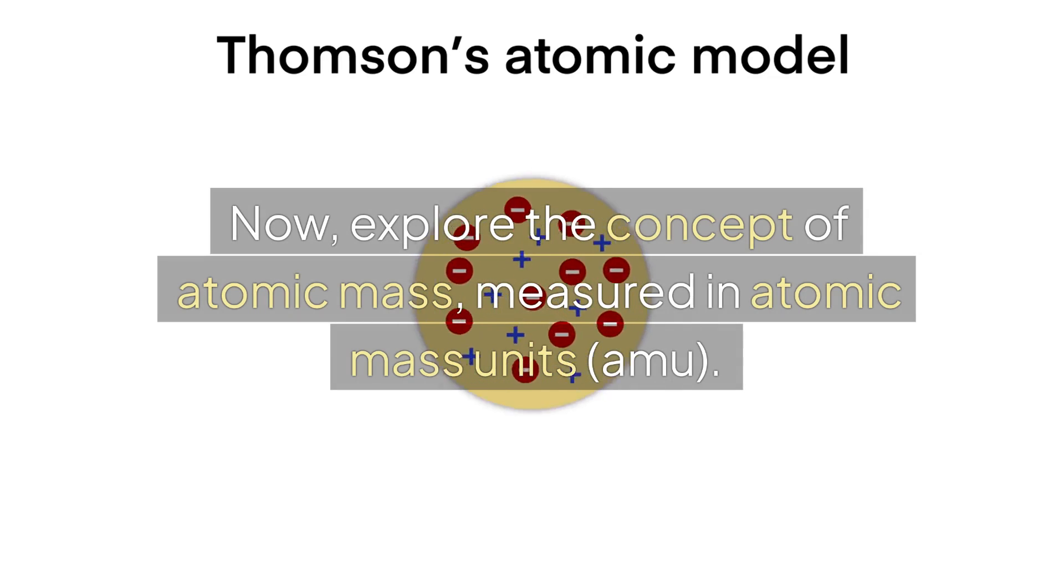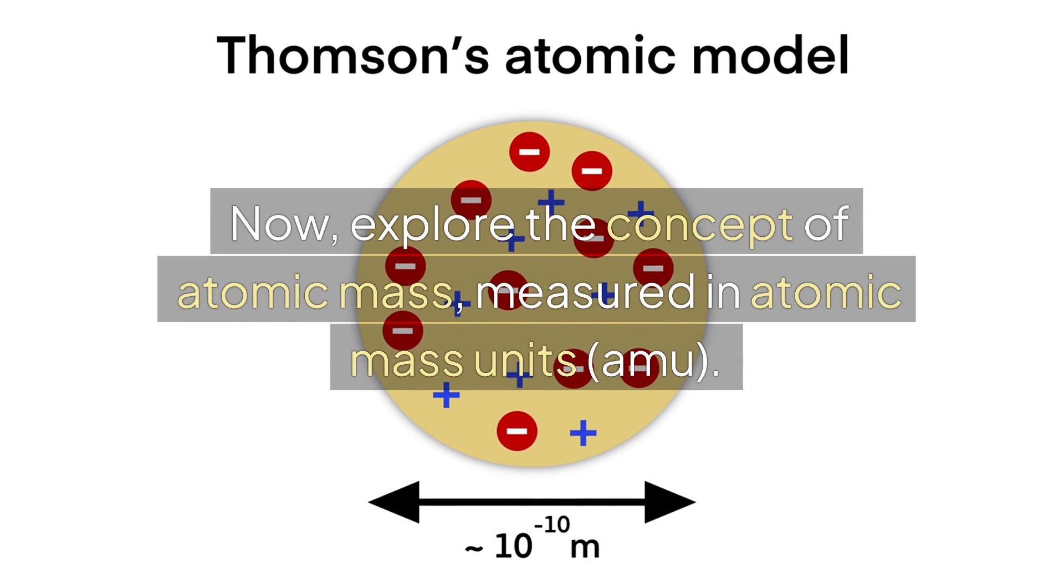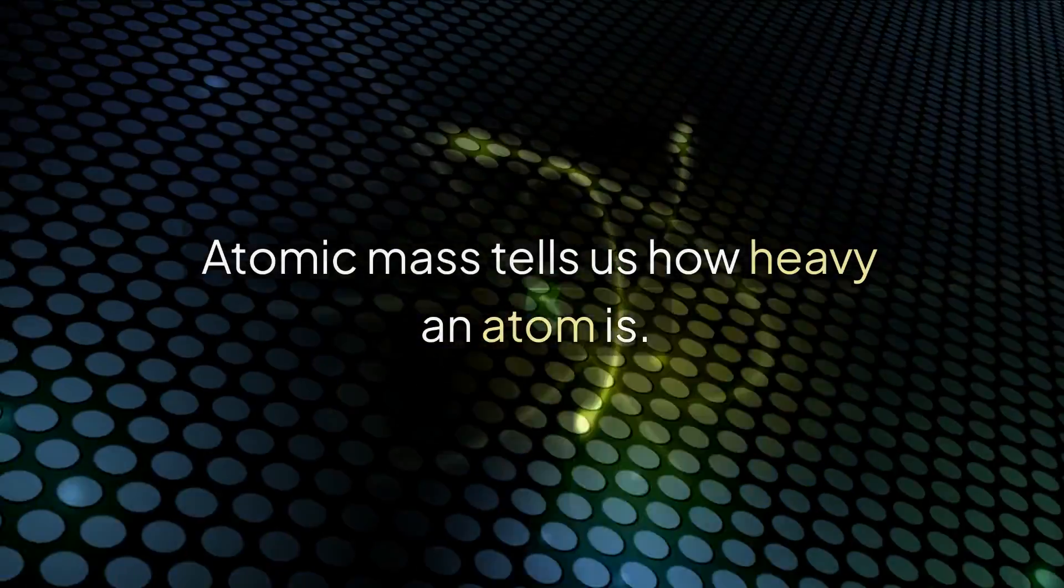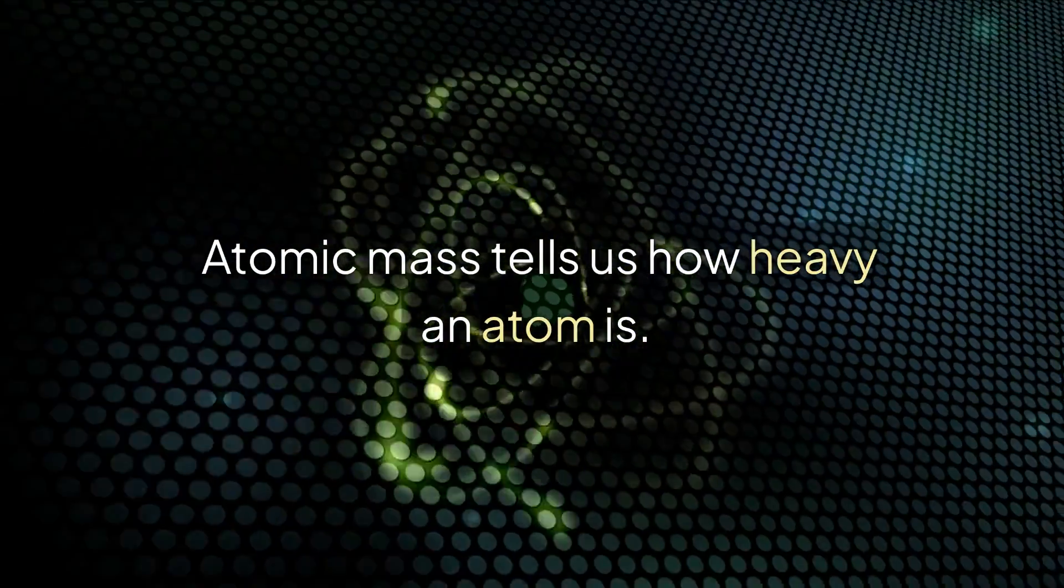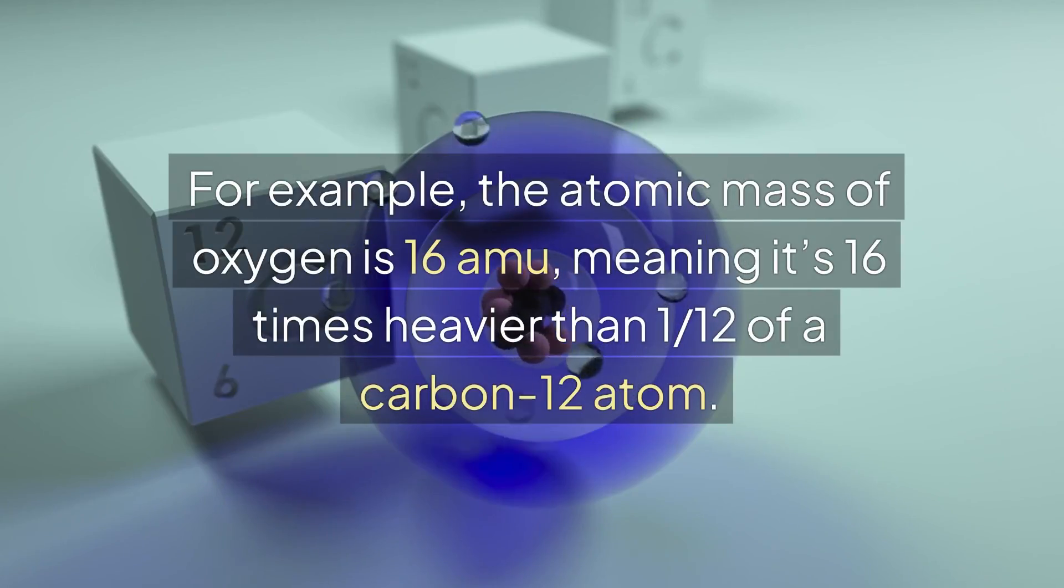Now explore the concept of atomic mass, measured in atomic mass units, AMU. Atomic mass tells us how heavy an atom is. For example, the atomic mass of oxygen is 16 atomic mass units, meaning it's 16 times heavier than one twelfth of a carbon-12 atom.